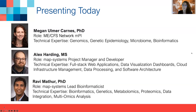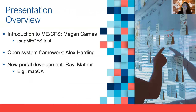Today you'll be hearing from myself — the ME/CFS Network MPI with expertise in genomics — Alex Harding, who is our MAP Systems Project Manager and Lead Developer, and Dr. Ravi Mather, who is our Systems Lead Bioinformaticist with expertise in multi-omic data analysis. For today's presentation, I'm going to start by introducing ME/CFS, which is a complex multifactorial disease, followed by the MAP-MECFS tool that we designed to help the research community. I'll then pass it to Alex Harding, who will do a live demo and describe more about the system framework. And finally, Ravi Mather will tell us more about how we are re-implementing this tool in a different disease area.